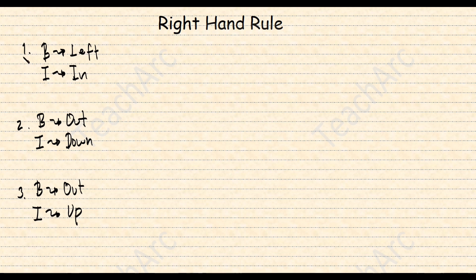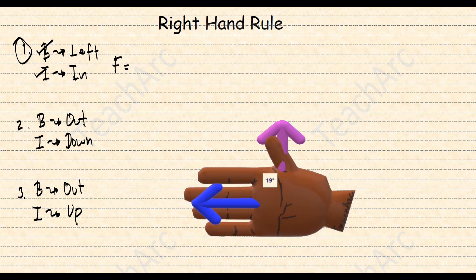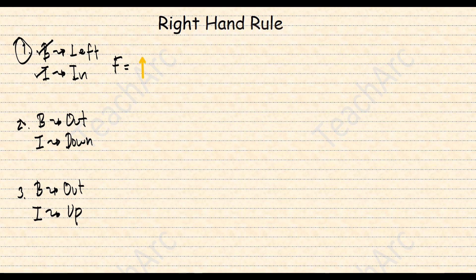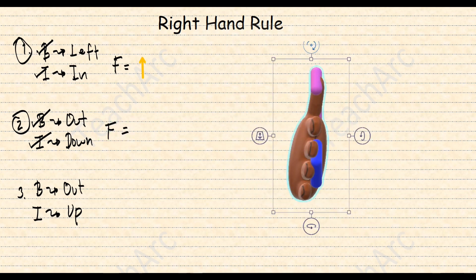For the next set: with the magnetic field to the left and the current pointing into the screen, the magnetic force would be upward. With the magnetic field out of the screen and the current pointing down, the magnetic force would be to the right.